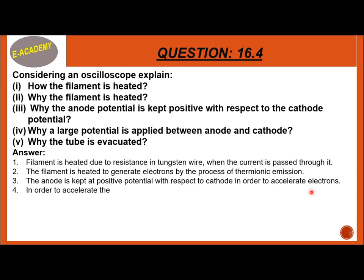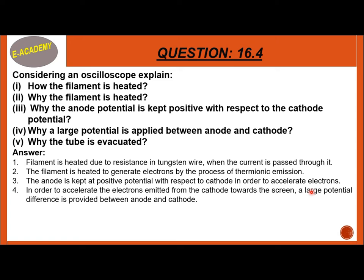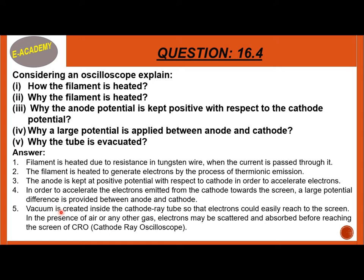Number 4: In order to accelerate the electrons emitted from the cathode towards the screen, a large potential difference is provided between the anode and cathode. Number 5: The tube is evacuated to create a vacuum inside the cathode ray tube so that electrons can easily reach the screen. If air or gases were present, electrons may be scattered and absorbed before reaching the CRT screen.